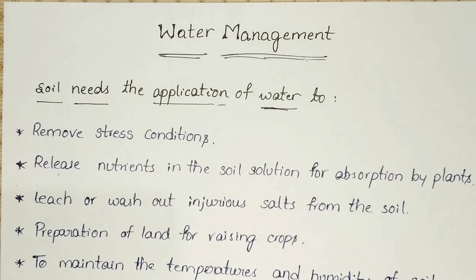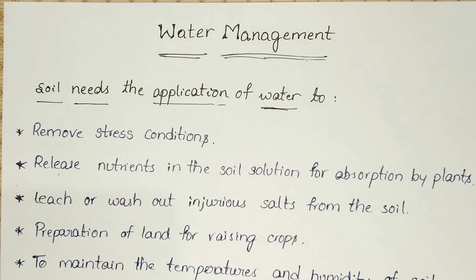Water is one of the most important inputs essential for the production of crops. Plants need it continuously during their life and use huge quantities. It profoundly influences photosynthesis, respiration, absorption, translocation, and utilization of minerals and nutrients.